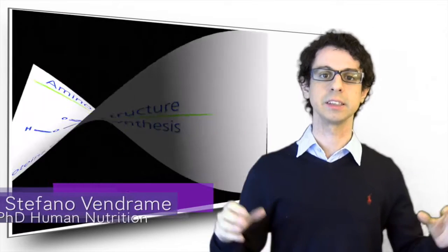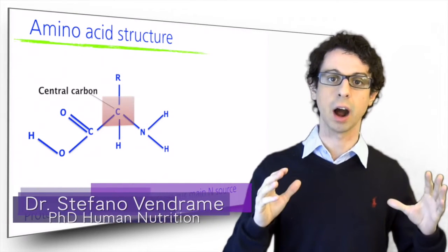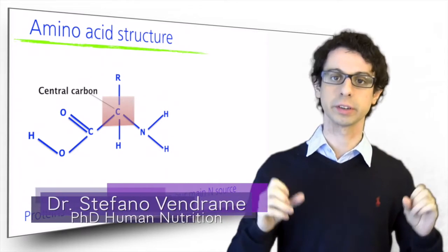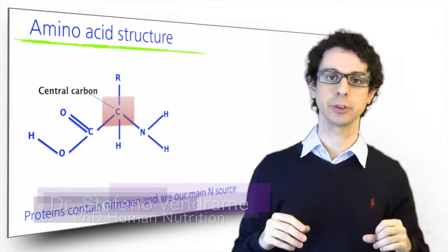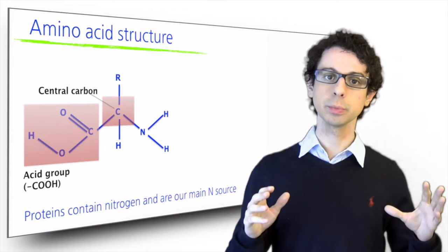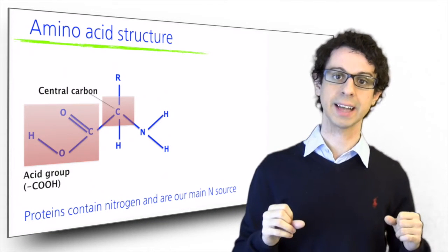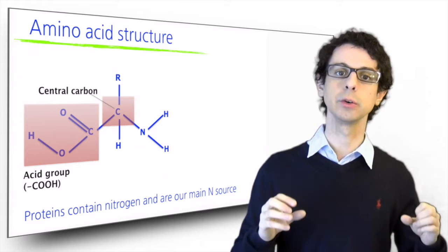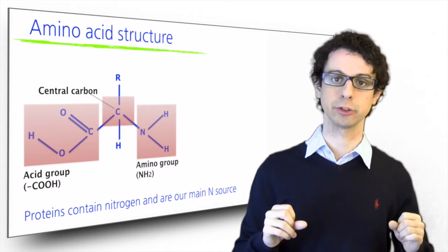Each amino acid is made of a central atom of carbon that is bound to four different groups. One is an atom of hydrogen, one is a carboxyl group — the same that we have seen at the terminal end of fatty acids — and the other group is an amino group that contains nitrogen.